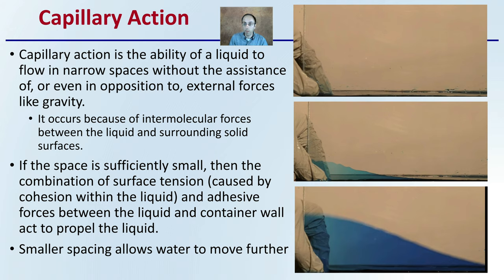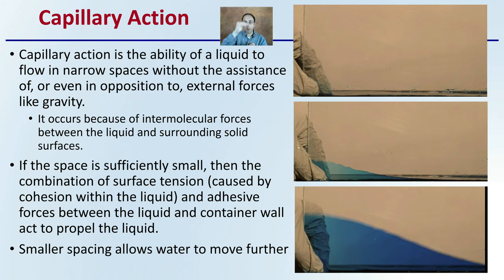What we're looking at here is a glove, a clear piece of glass, and a blue liquid at the bottom. There are actually two pieces of glass, and the person is pinching those two pieces together. As they make the gap tighter, they reduce the space, causing that water to flow against gravity. Pushing even tighter makes the space even smaller, allowing water to travel even further. If the space is sufficiently small, the combination of surface tension from the cohesive properties of water and adhesive forces between the liquid and container wall act to propel the liquid upward.